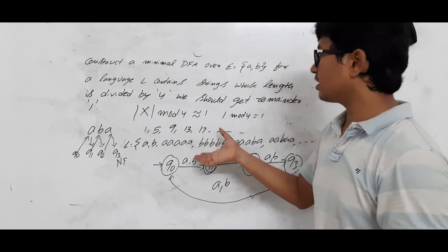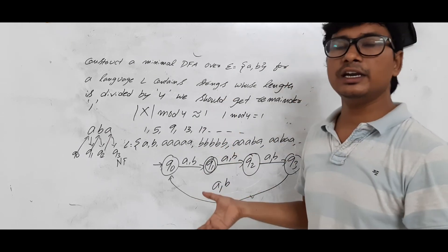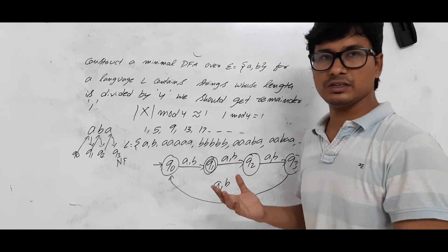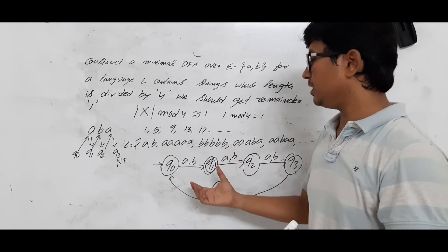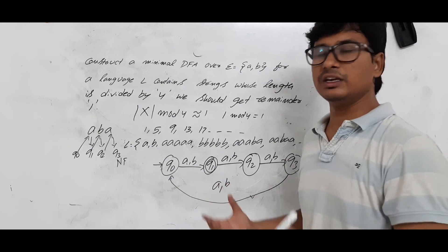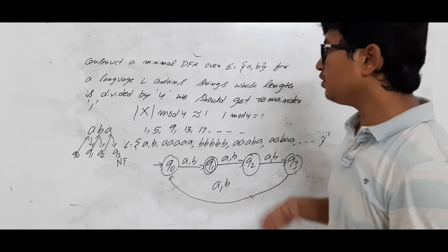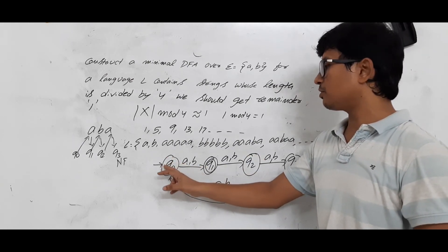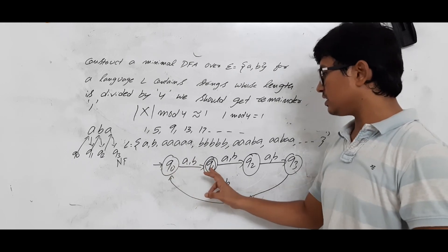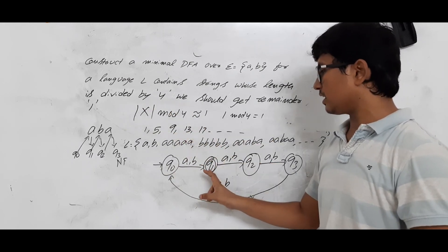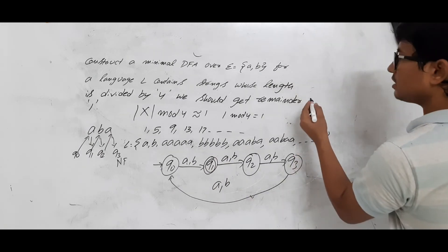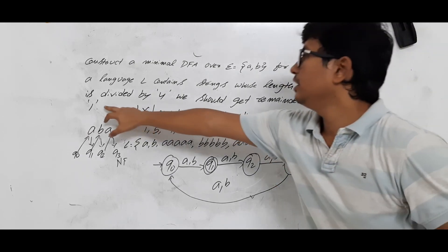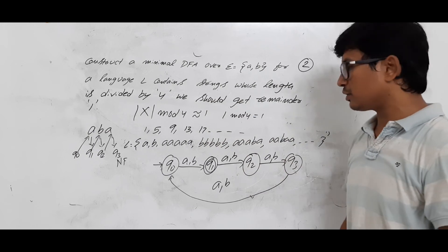So for the given question, this is the correct and minimal DFA. Minimizing the DFA means minimizing the number of states. You can get many different DFAs, but the minimal one has four states — the same count as the previous question where the remainder was zero, where q0 was the final state. Here, with remainder one, q1 is the final state. If we change it to remainder two, we only need to make q2 the final state.